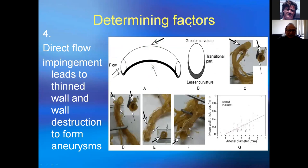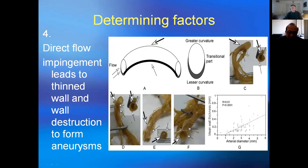The exact determinant factor is that direct flow impaction can lead to wall destruction and aneurysm formation. Schematically, blood flow directly impacting one side makes that side very thin, while the other side without direct flow impaction becomes very thick. This was confirmed from a human corpse specimen — opening it shows one side very thick with cordial body, and the opposite side very thin where blood flow directly impacted. Artery diameter is positively correlated with wall thickness: when the artery is very large, the wall thickness is also very great.